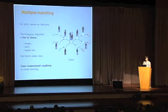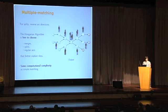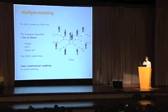We can do the same for split events by reversing the arc directions, and you might get something like the graph you see here. As you can see, the Hungarian algorithm is now free to choose between merges, splits, and regular arcs to better explain the data. This has the same computational complexity as simple matching, but models many more hypotheses.